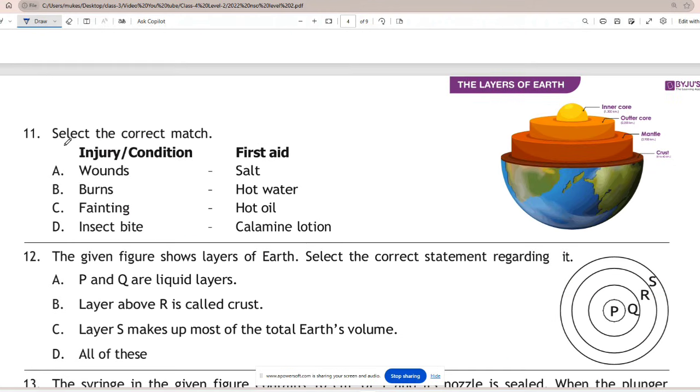Question 11: Select the correct match with injury. The correct match is D - insect bite and calamine lotion. On insect bite, calamine lotion can help relieve itchiness, pain, and discomfort caused by bug bites. Rest all other options are incorrect.